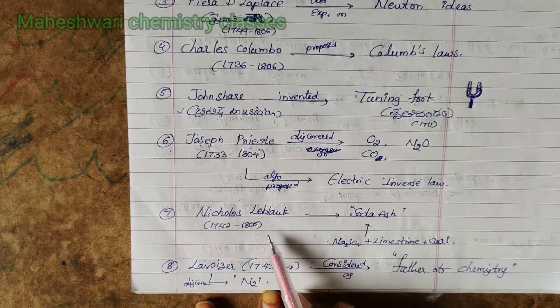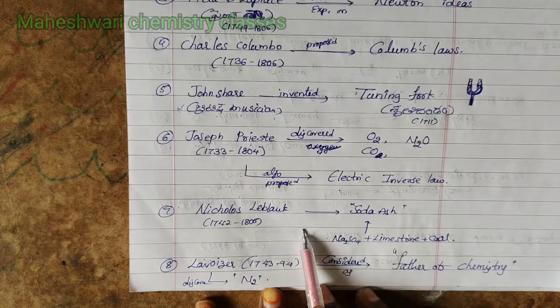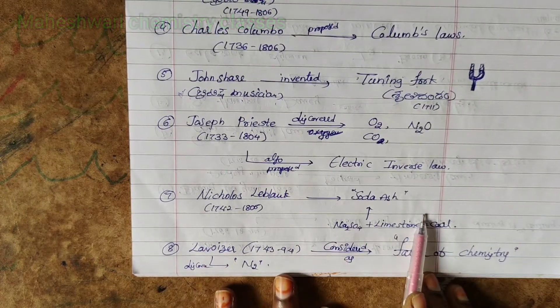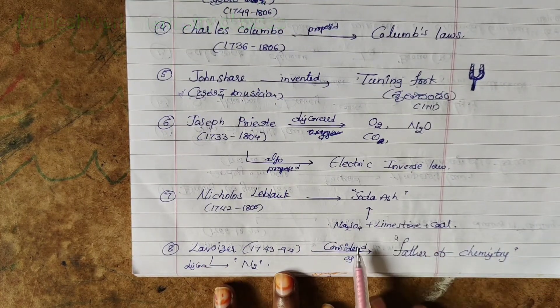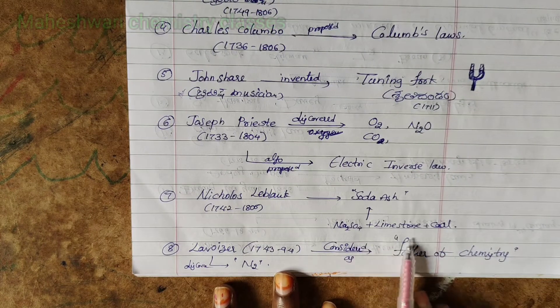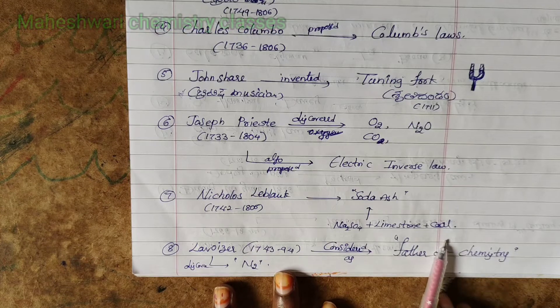Nicholas Leblanc discovered soda ash, which is a combination of sodium sulphate, limestone, and coal.